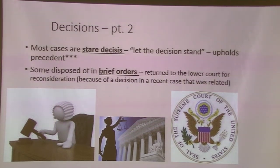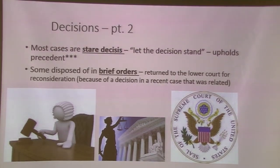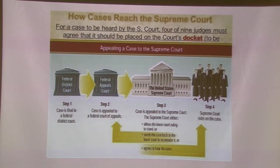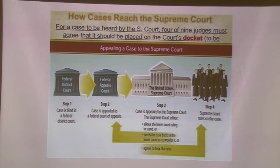Some other rulings are brief orders, where the court tells a lower court to look at a case again. What ends up happening is that while a case was appealed, another related case came down, so the earlier case now fits with the newer one. This chart is actually very good for showing the basics — it's pretty straightforward for the judicial branch, and this is political science, so having the vocabulary is important.